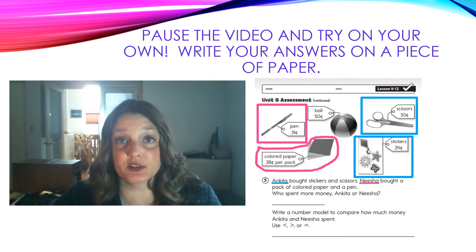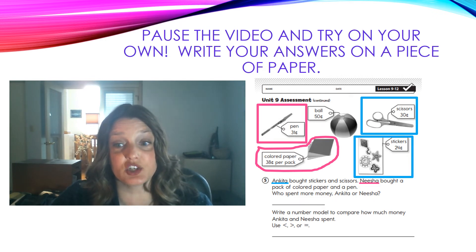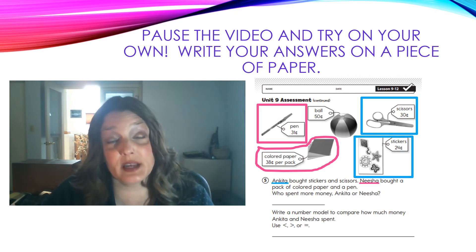Use the pictures and the prices for number 5. Ankeeta bought stickers and scissors. Her items are in the blue boxes. Nisha bought a pack of colored paper and a pen. Her items are in the pink boxes. You have to decide who spent more money, Ankeeta or Nisha. Then, write a number model to compare how much money Ankeeta and Nisha spent. Use the symbols to compare your numbers. Pause the video and try this on your own. Write your answers on your paper.